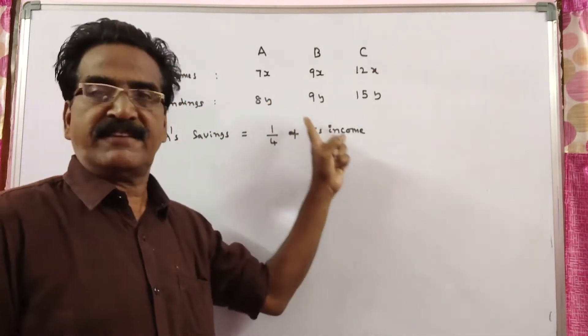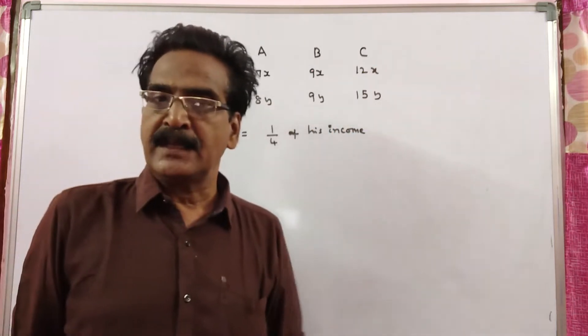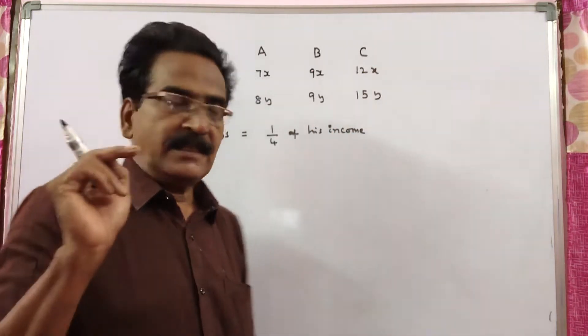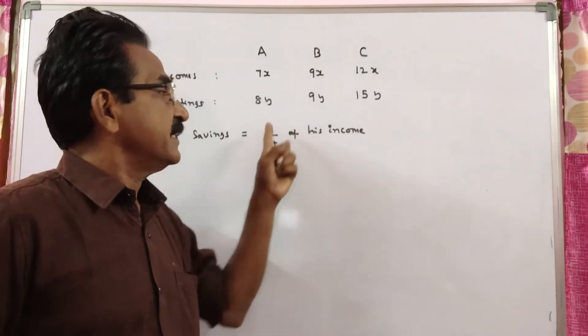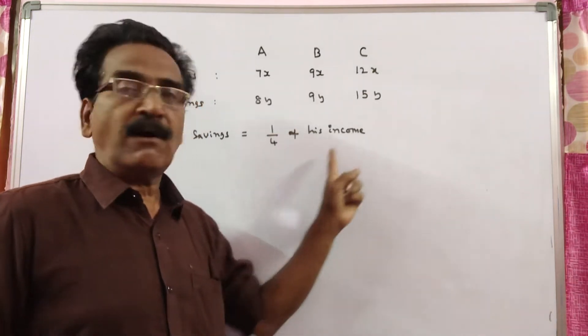And their spendings are in the ratio 8 is to 9 is to 15. That means their spendings are 8y, 9y and 15y. It is also given that A's savings is 1 by 4 of his income.